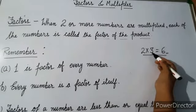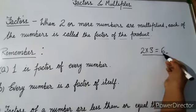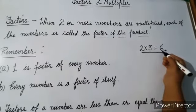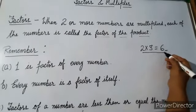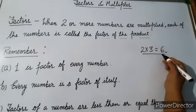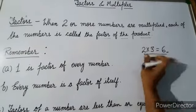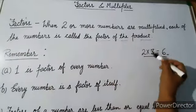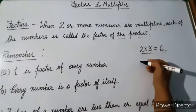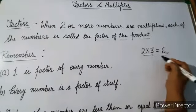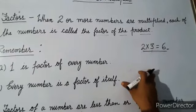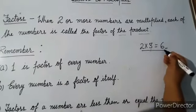We can say that two and three are the factors of six. Yeh jo two aur three hai, wo six ka factor hai. Because when we multiply two and three we get the product six. In another way we can understand: when a number is completely divisible by another number.